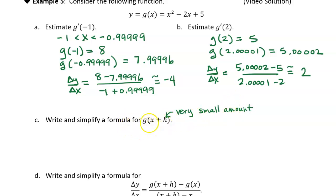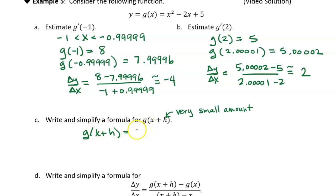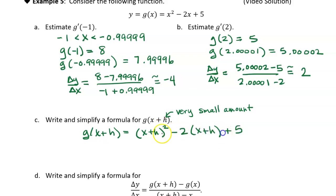So the first thing I'm going to do is find g of x plus h, where h is a very small amount. I know the formula for g of x, so g of x plus h — this is a composition of functions; I'm putting x plus h in anywhere I see x. So x squared becomes x plus h squared, minus 2 times x plus h, plus 5. That's what g of x plus h looks like.